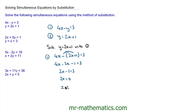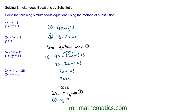Now we've got a value for x, we're going to substitute this value into either equation 1 or 2. I'm going to substitute it into equation 2, because it just looks a lot easier. So for equation 2, we have y is equal to 2 lots of x, but we know that x is now 2, plus 1. So when x equals 2, y is equal to 5.